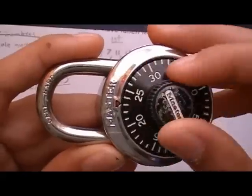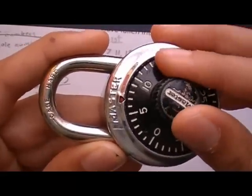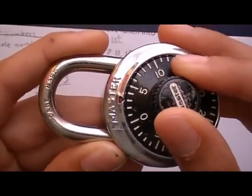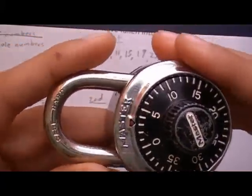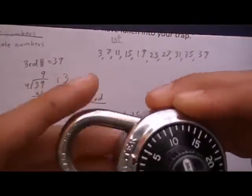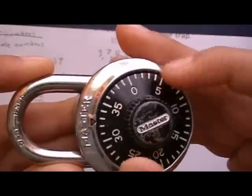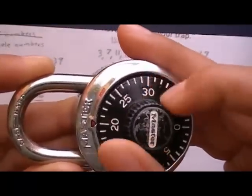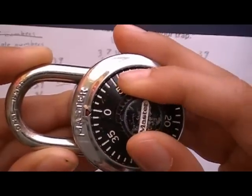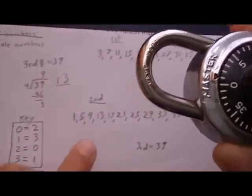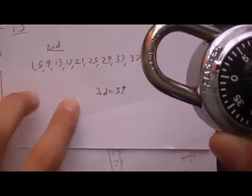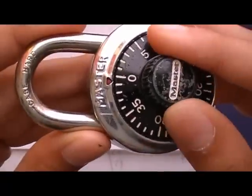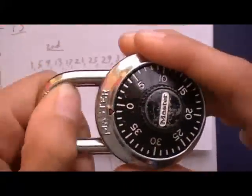So we find 3, we land on it. Then we turn it counterclockwise, past the second number. And on the second time around, we land on our second number, and then we just turn it clockwise to 39. So that's not it.